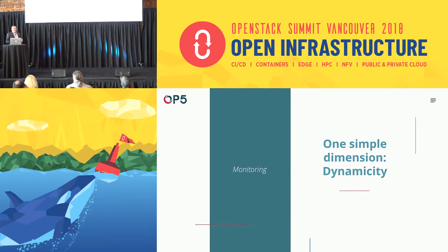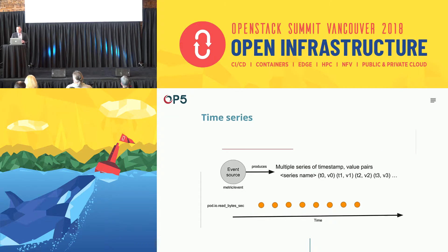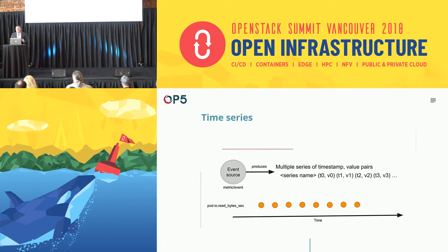I'd like to introduce the idea of dynamicity — essentially, what's the rate of change in your environment. If you think about how monitoring works, we're trying to capture time series data. At a very simple level, it could be something like pod.io.readbytes per second, or a CPU metric, or a disk I/O metric — any type of metric we're trying to capture in a time series database. This is really simple stuff, and products like Nagios are good for doing that. But let's look at what happened when we introduced dynamicity.